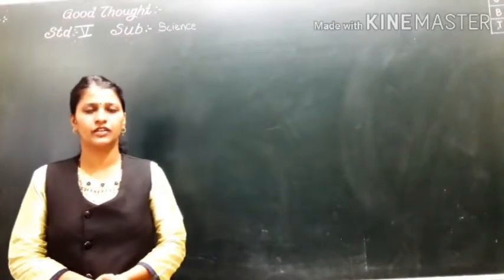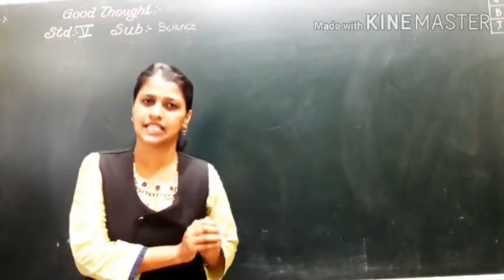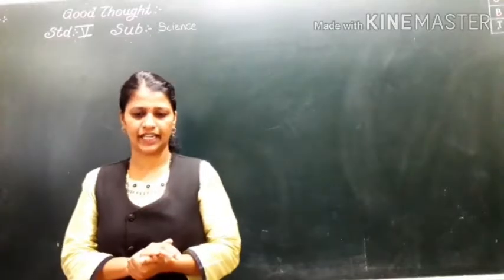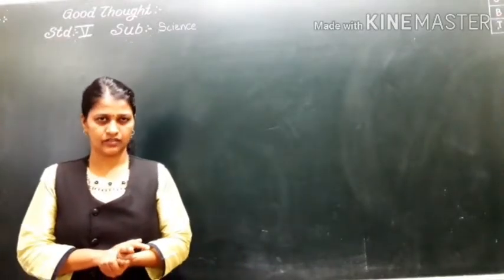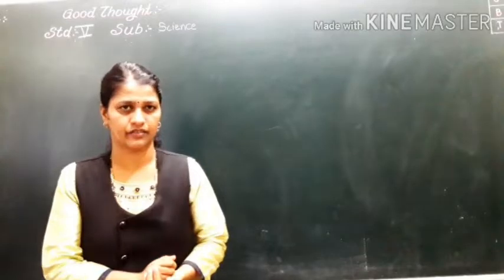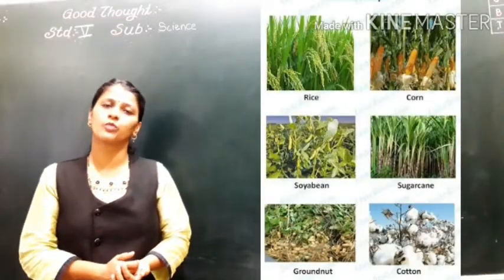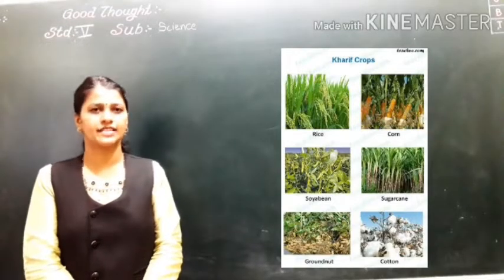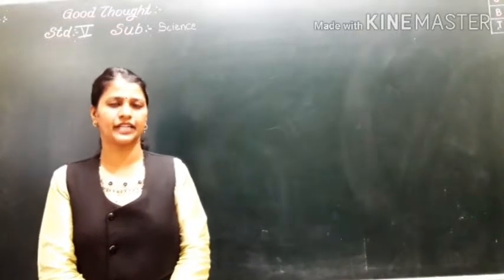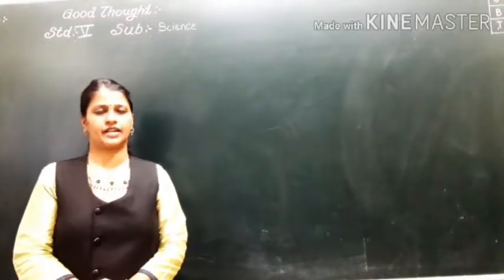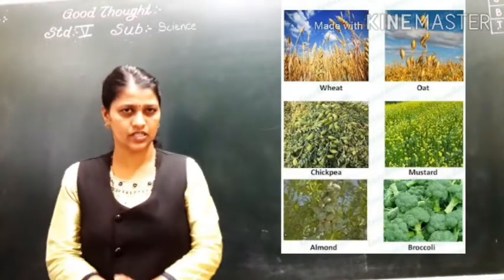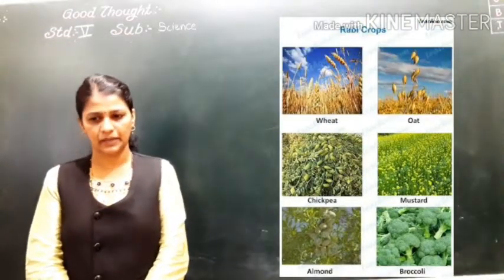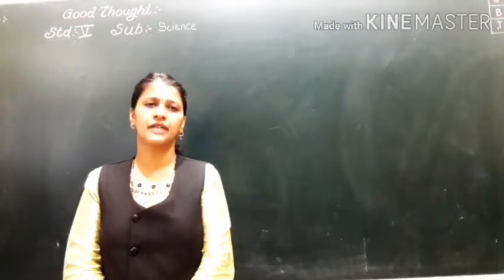There are some plants which grow in a particular season. For example, rice, maize, and cotton need rain, so we can plant them in the monsoon season — those plants are called Kharif crops. And there are some plants which do not require the monsoon season — they are called Rabi crops. For example, wheat, pea plant, and gram are some examples.